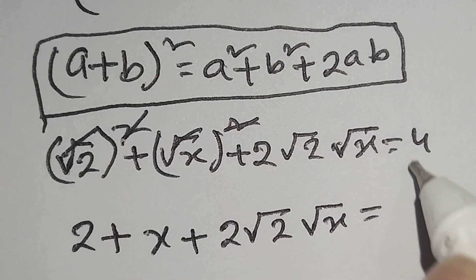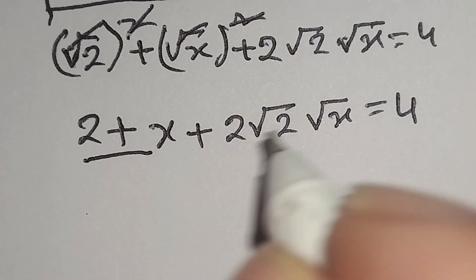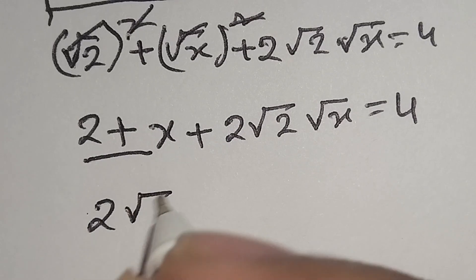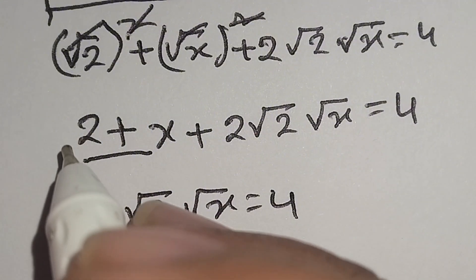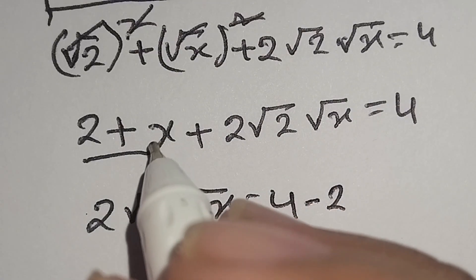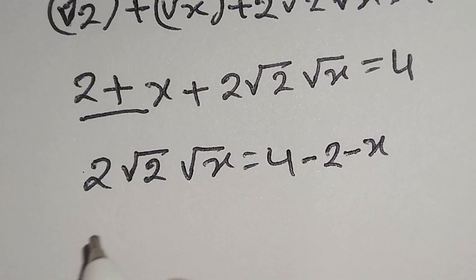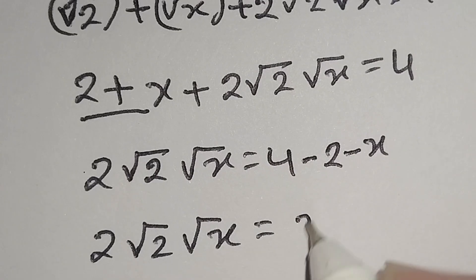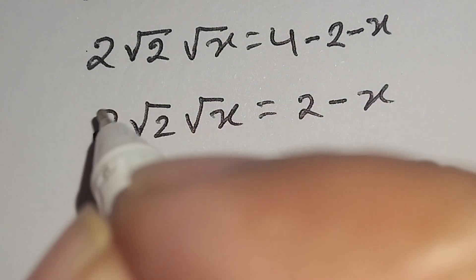Here x plus 2 times square root of 2 times square root of x is equal to 4. Now we will move the 2 plus x to the right side. So we can write 2 times square root of 2 times square root of x is equal to 4 minus 2 minus x, which gives us 2 times √2 times √x is equal to 2 minus x.